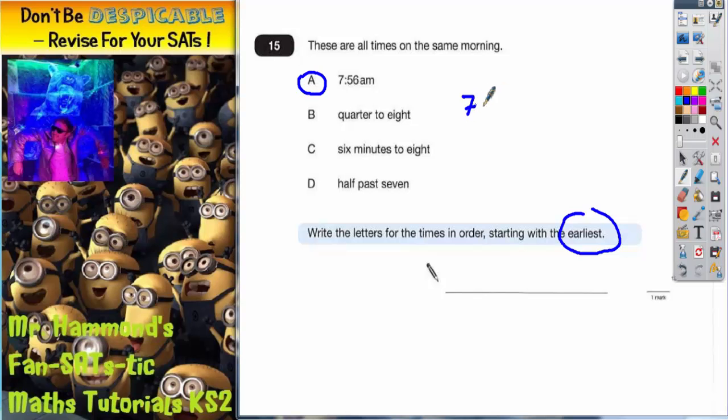And 15 minutes to 8 is going to be 7:45 AM. Six minutes to eight, well if you count backwards six minutes from eight o'clock, it's going to be 7:54.